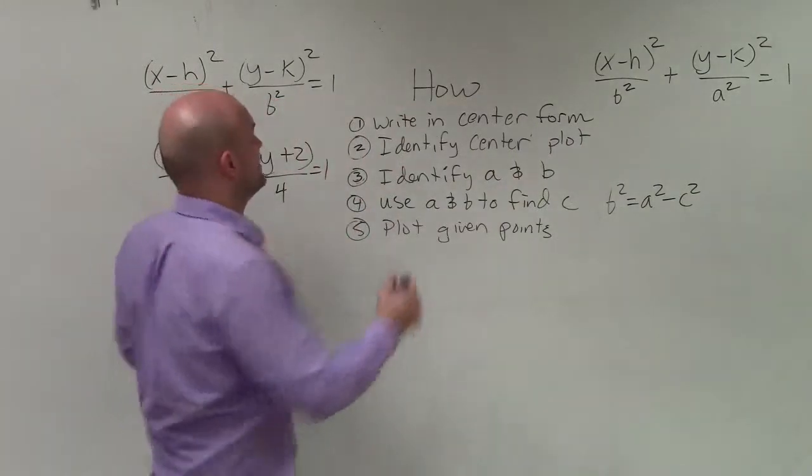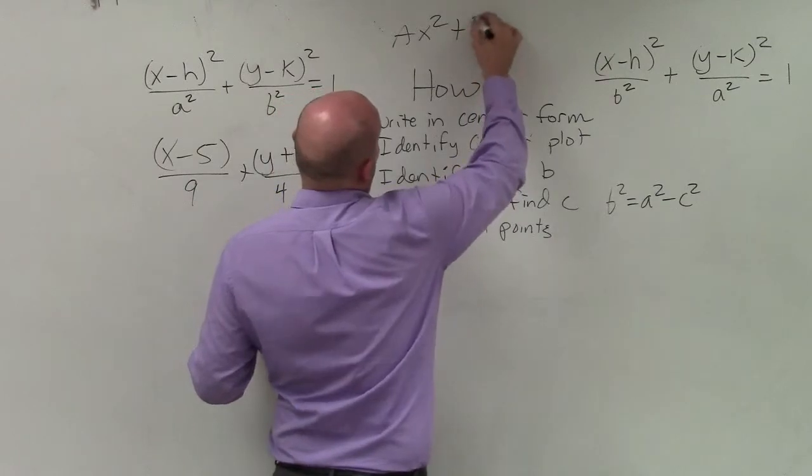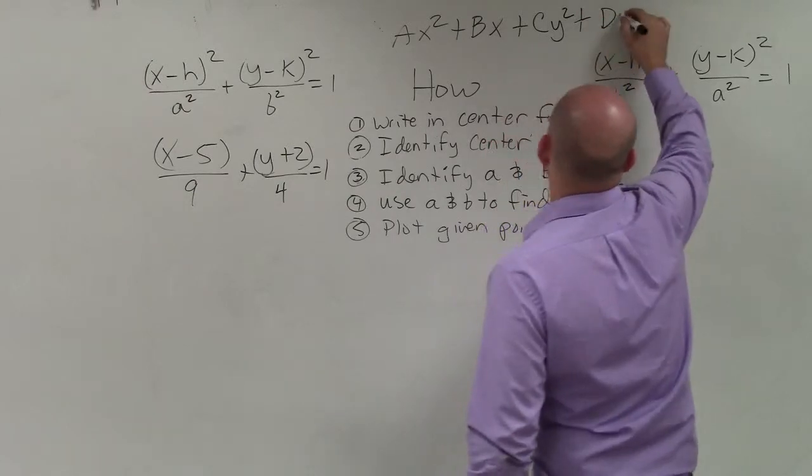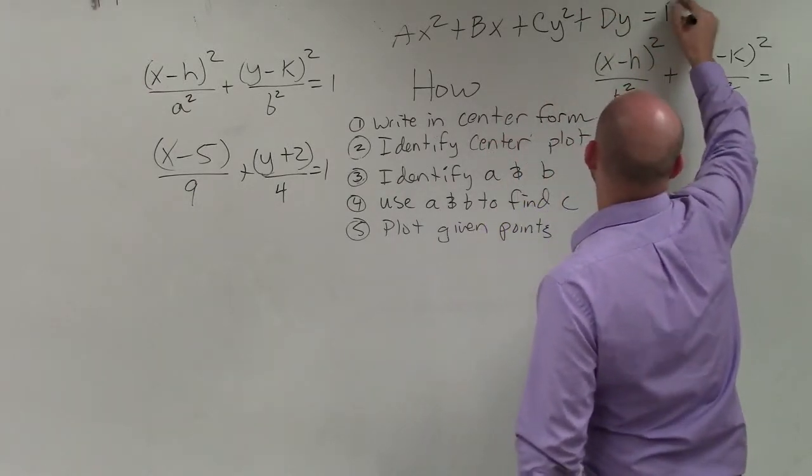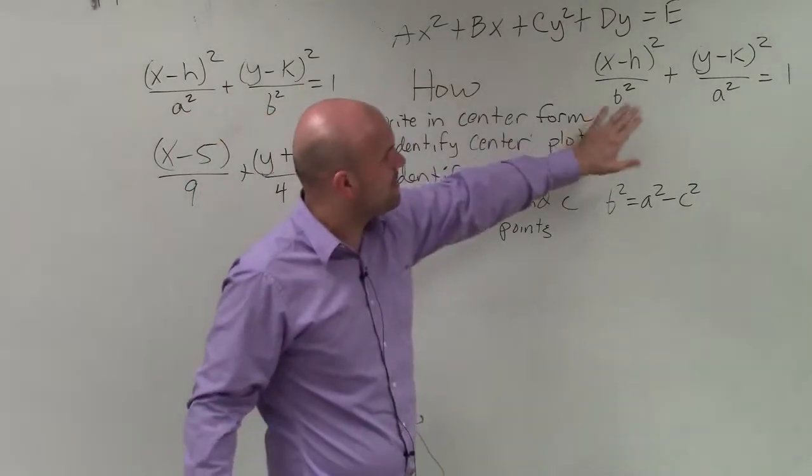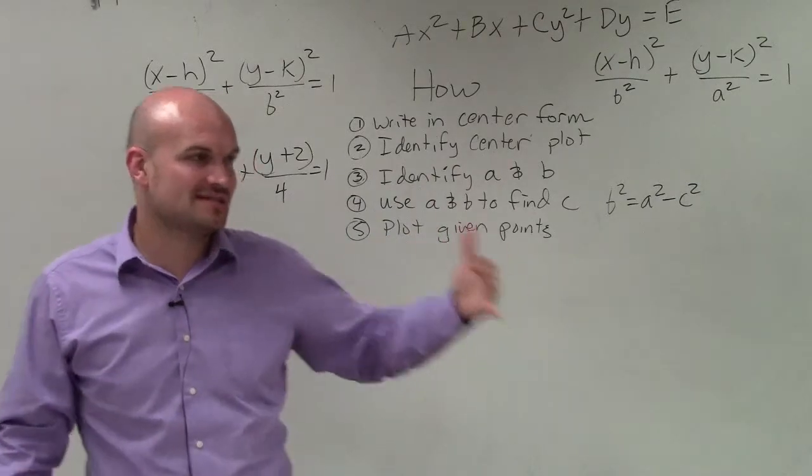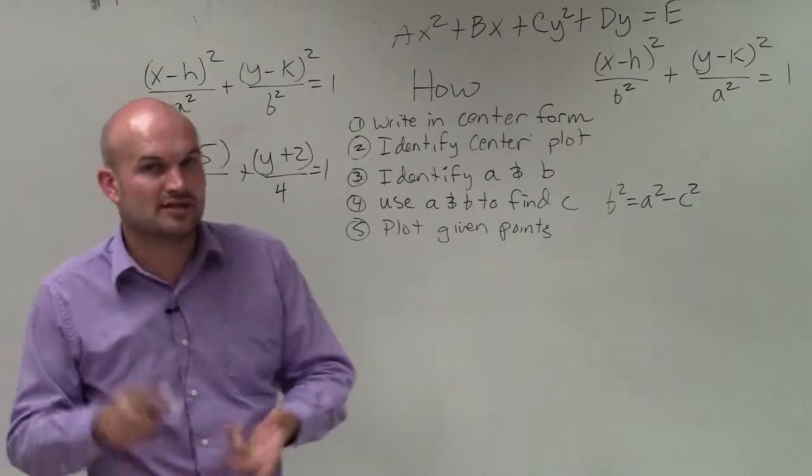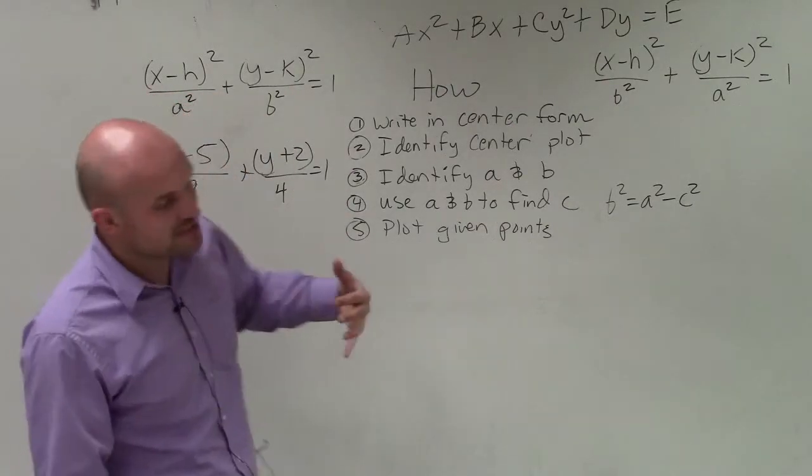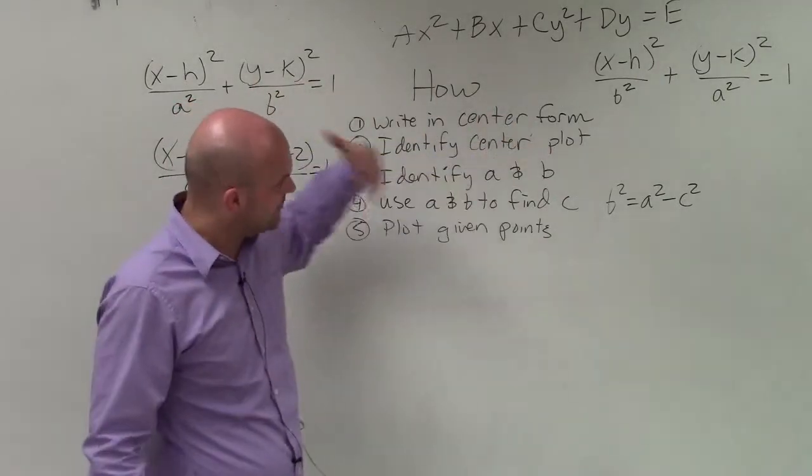So if we have it in our standard form, a times x squared plus bx plus cy squared plus dy equals e, then we're going to want to rewrite that equation so that it's in a format in these two. Because it's going to be very difficult for us to be able to identify the center, the vertices, the co-vertices, and the foci when it's not in that format. So the first thing we want to do is make sure that it's in our center form, which I call it.